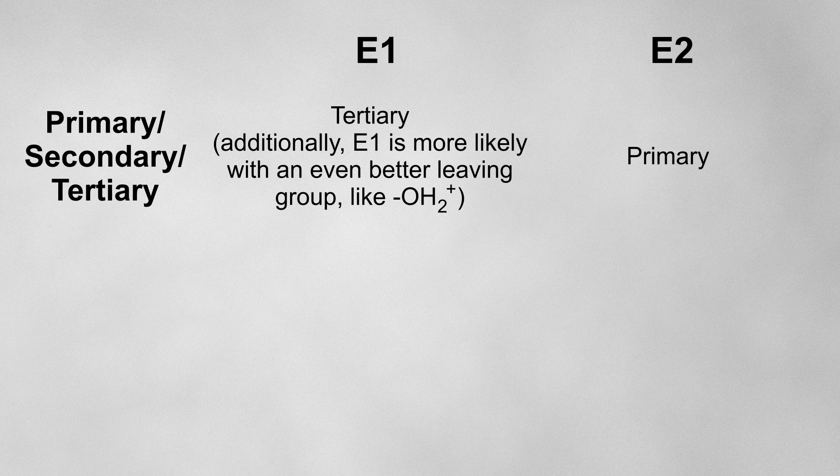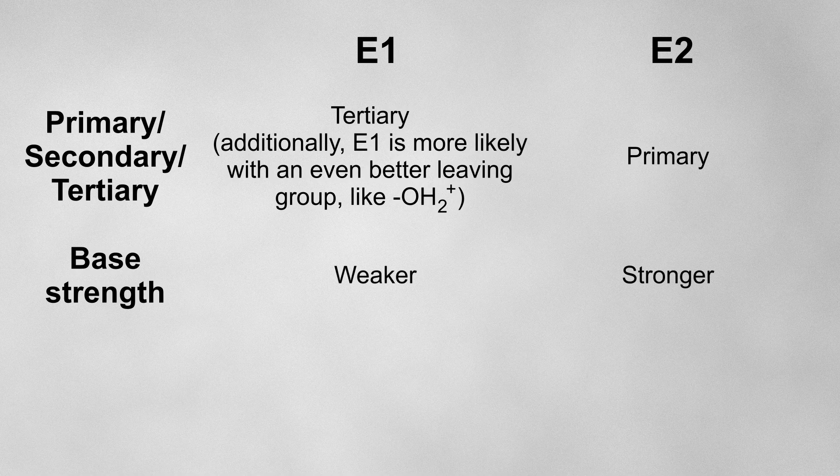For E2, the way to predict whether this mechanism will occur is the strength of the base. A stronger base tends to favor E2 elimination.